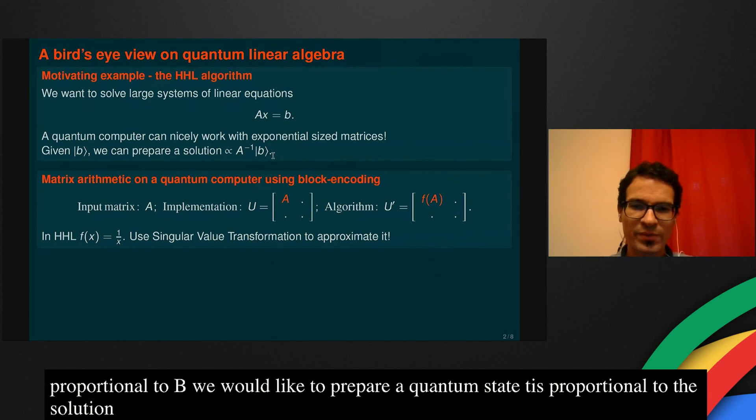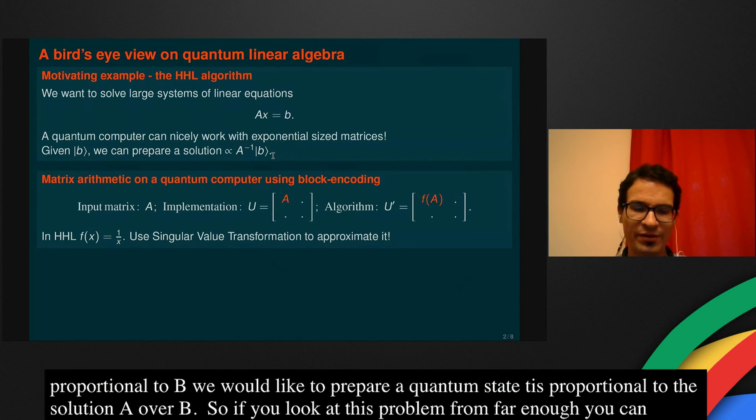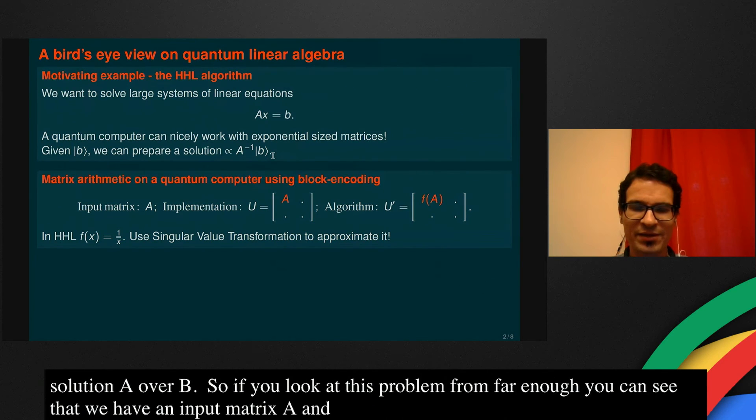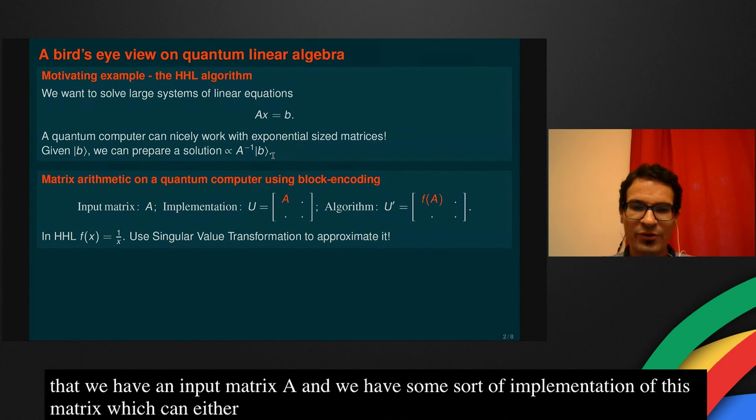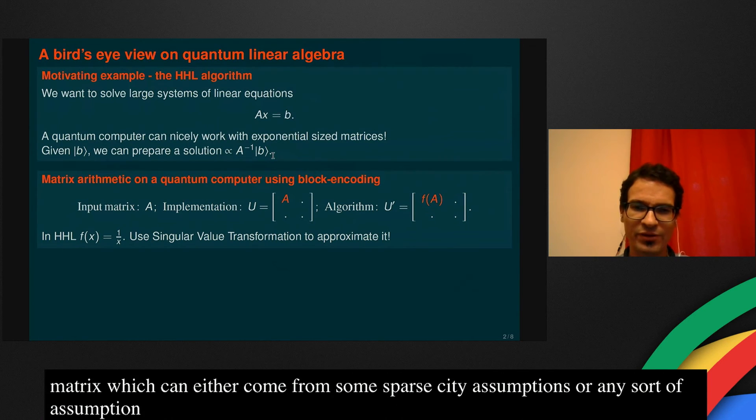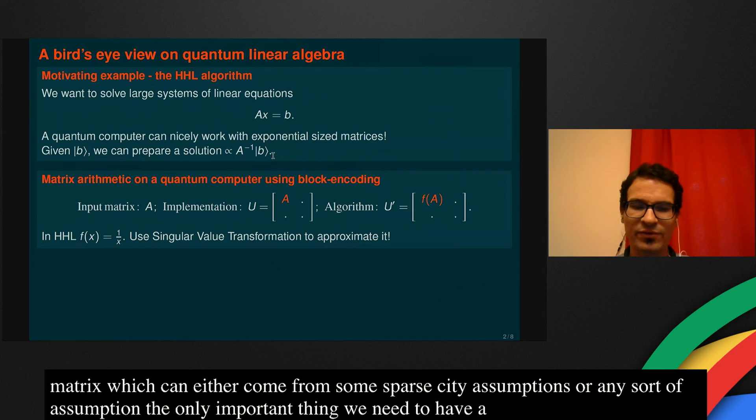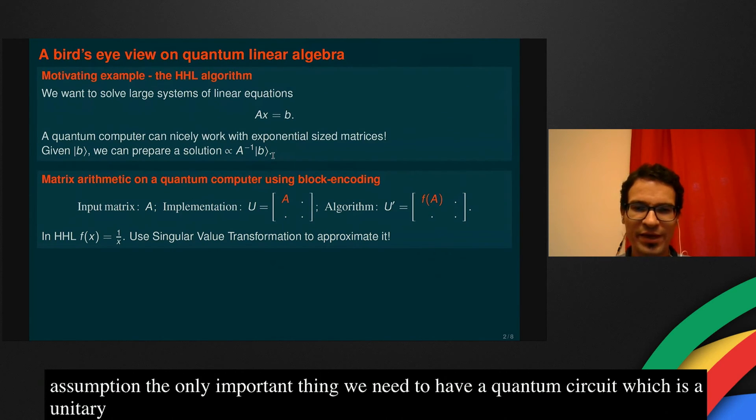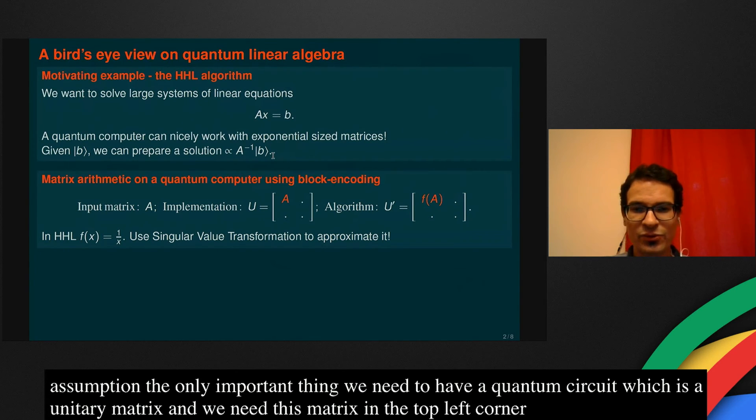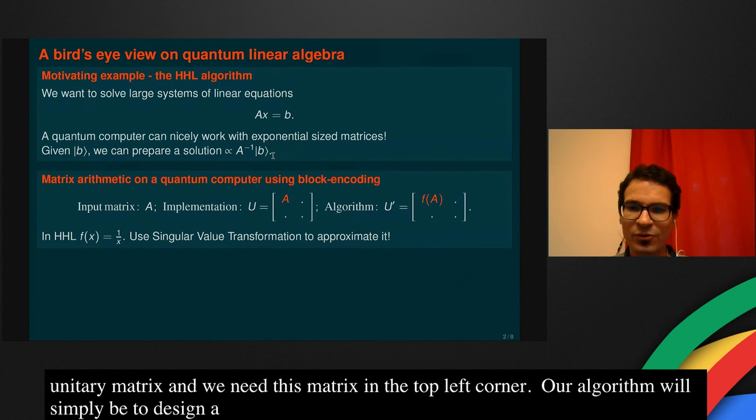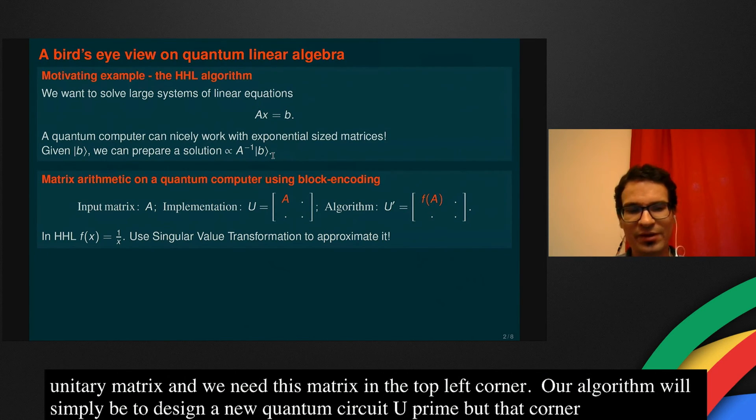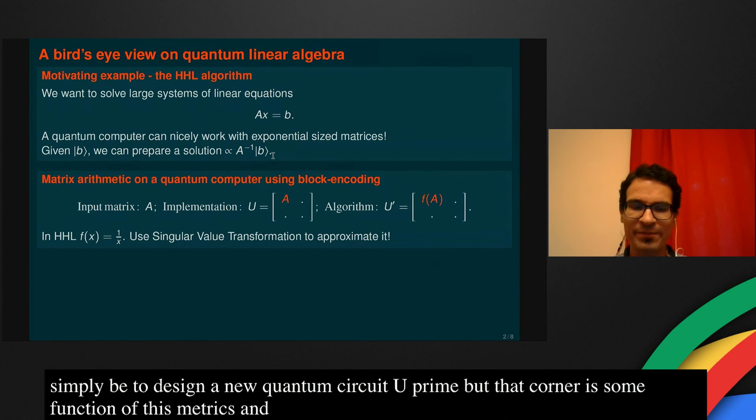If we look at this problem from far enough, we can see that we have an input matrix A. And we have some sort of implementation of this matrix, which can either come from some sparsity assumptions or really any sort of assumptions. The only important thing is that we need to have a quantum circuit, which is of course a unitary matrix if we describe it as a linear operator. And we need this A matrix at the top left corner of this unitary matrix. Then our algorithm will be simply to design a new quantum circuit U prime, where the top left corner is some function of this original matrix. In case of this matrix inversion problem, we just want to apply the 1 over x function, which will invert the matrix.